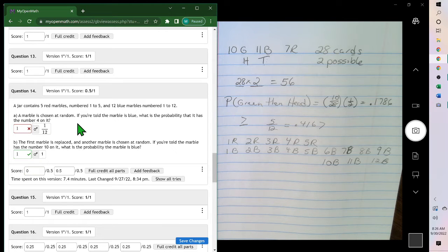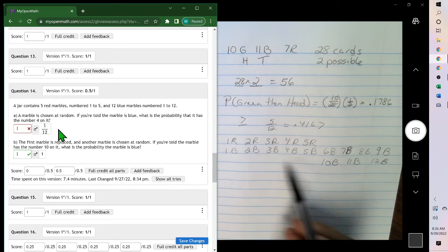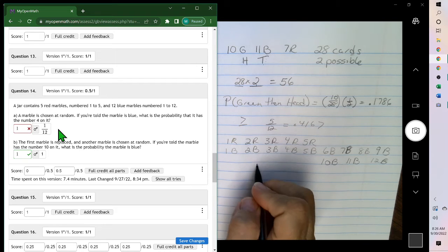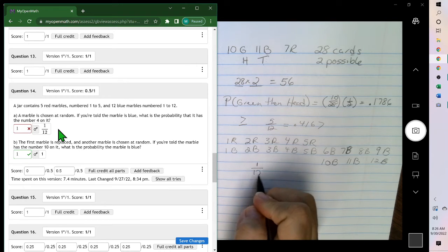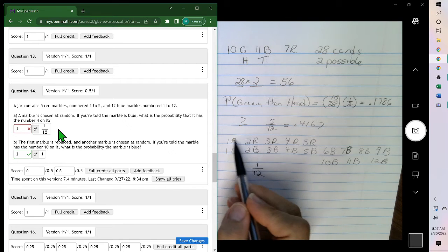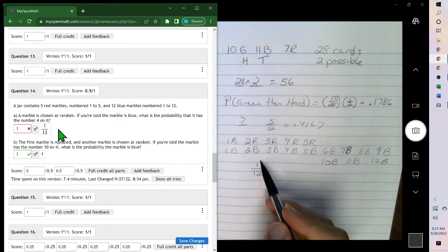A marble is shown at random. If you're told the marble is blue, what is the probability that it has a number 4 on it? So if we already know it's blue, then it's only these bottom group. There's only one with a 4 on it. So it's 1 out of the 12. Because we were told already it was blue, that cut all the red out. So it's 1 twelfth.